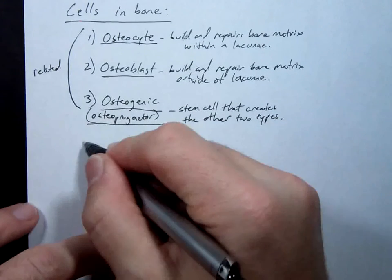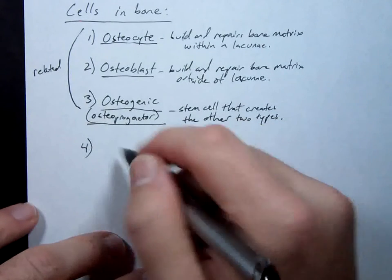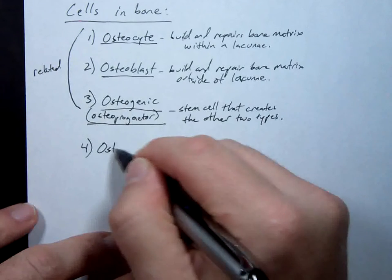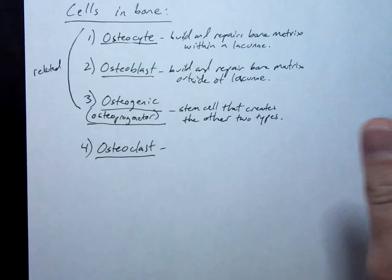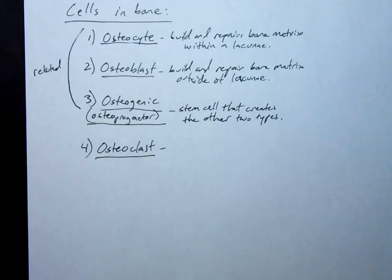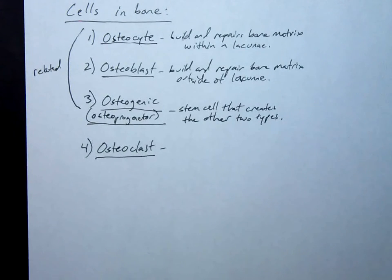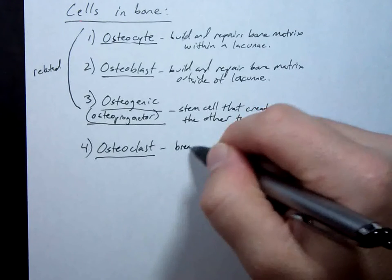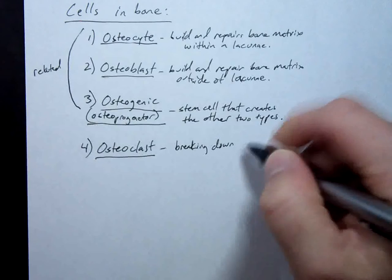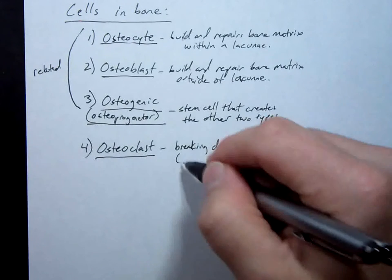The fourth cell type — osteoclast — is not in the family. When you hear 'clast,' think of the word 'clash,' because it does a job that is the opposite of what the other cells are trying to do. Those other cells are working diligently to build new bone matrix. This cell is breaking down — resorbing — bone.